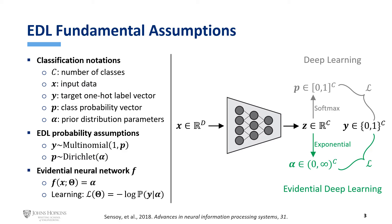Here are some fundamental assumptions of EDL. In the C-class classification problem, let X be the input data and Y be the target label. P is the class probability vector, and alpha is the vector of prior distribution parameters we are going to predict. The neural network generates Z, a vector of logits.